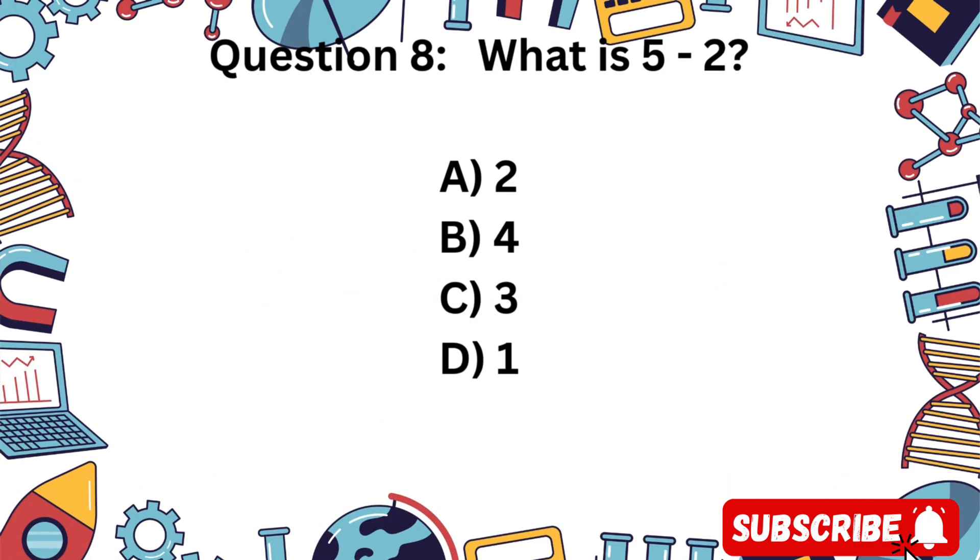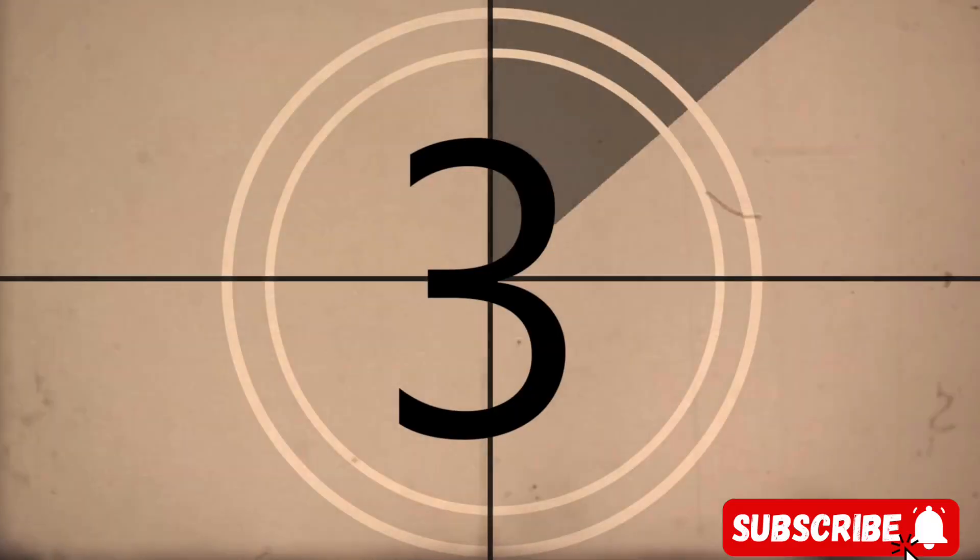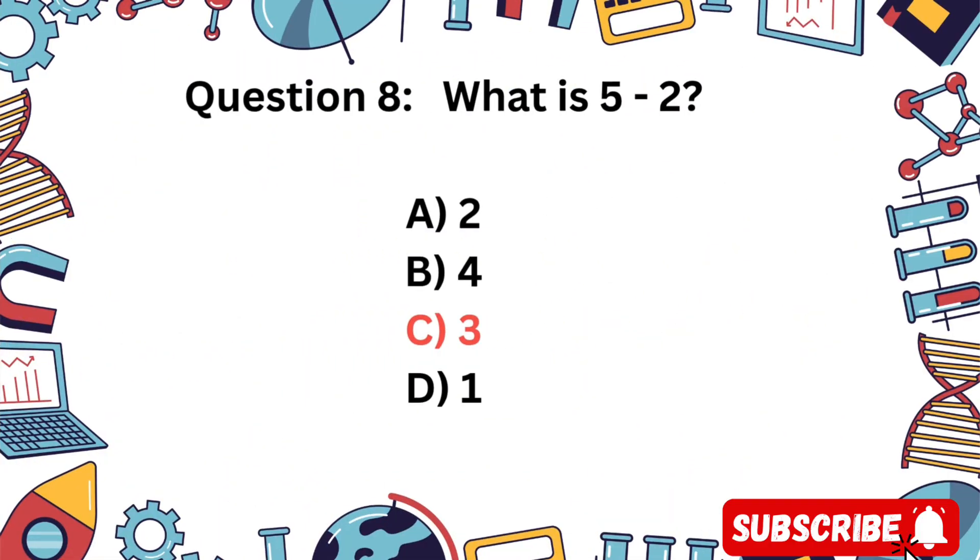Question 8. What is 5 minus 2? A) 2, B) 4, C) 3, or D) 1? You're right! 5 minus 2 is 3.